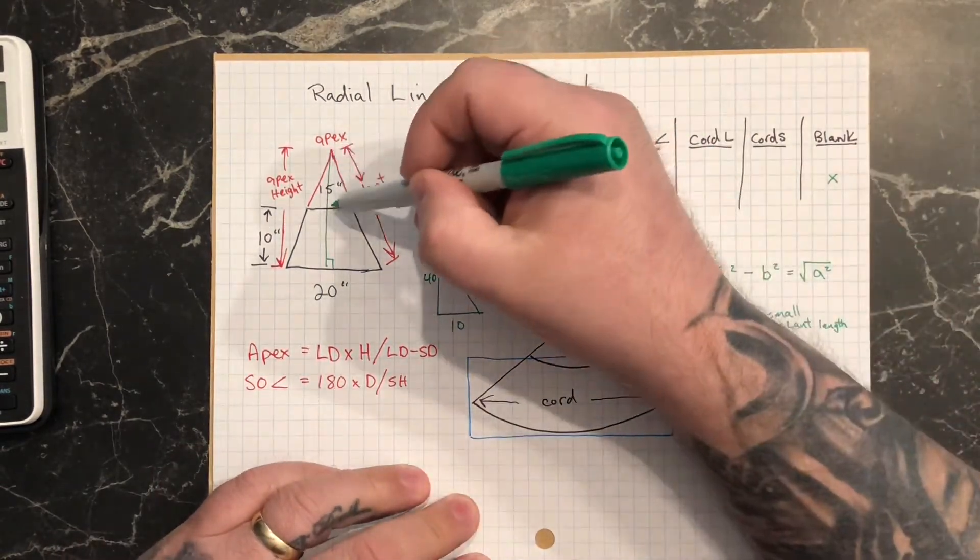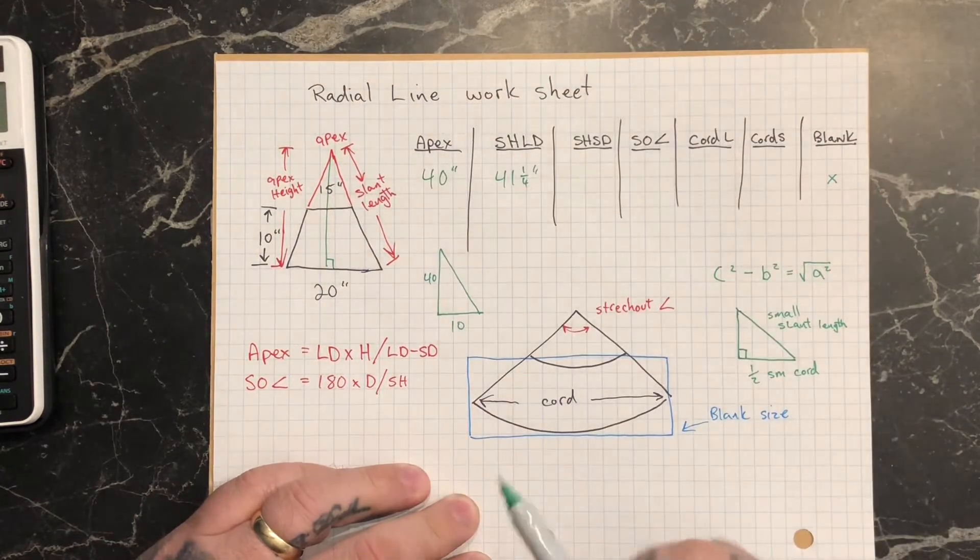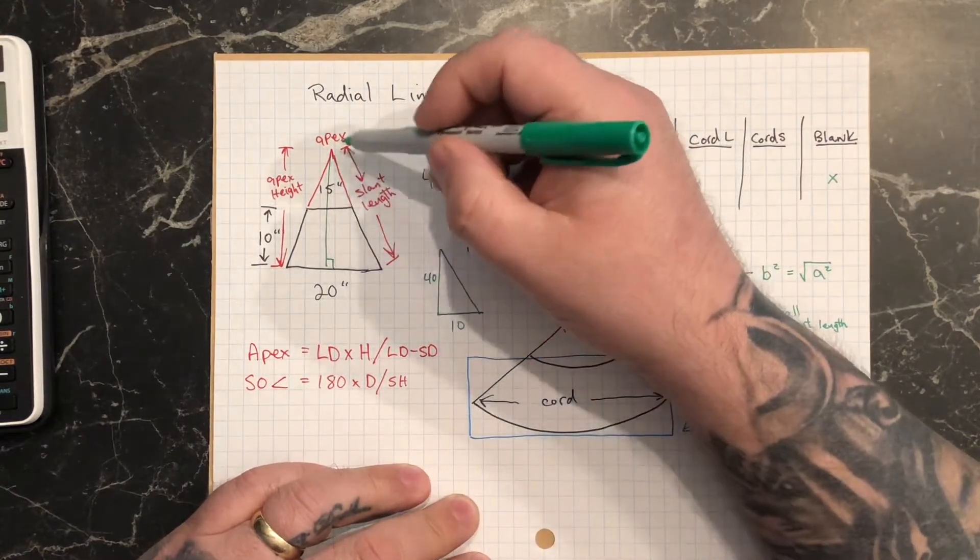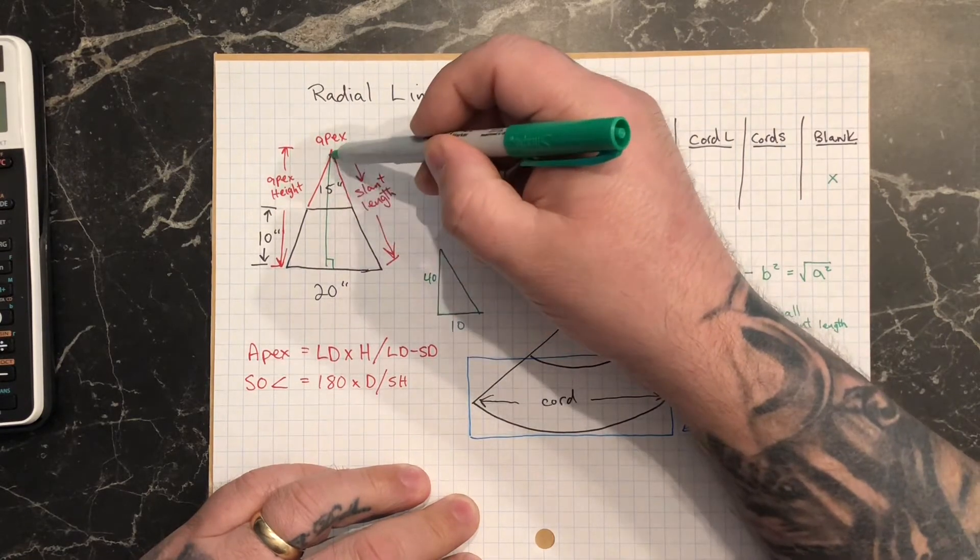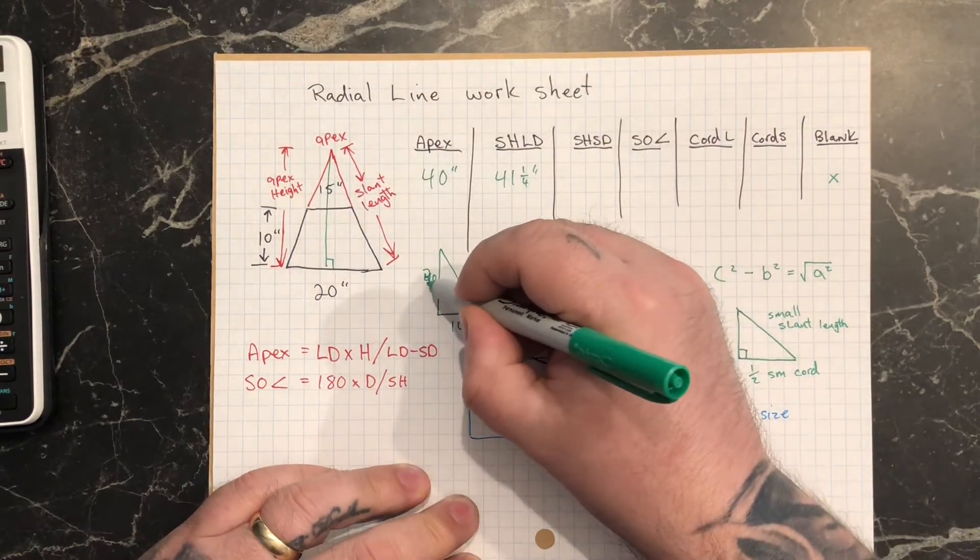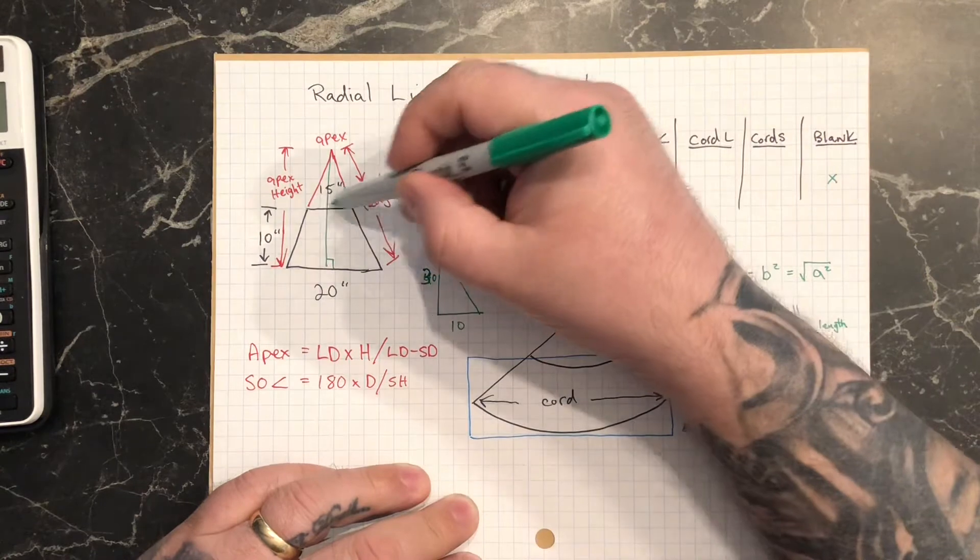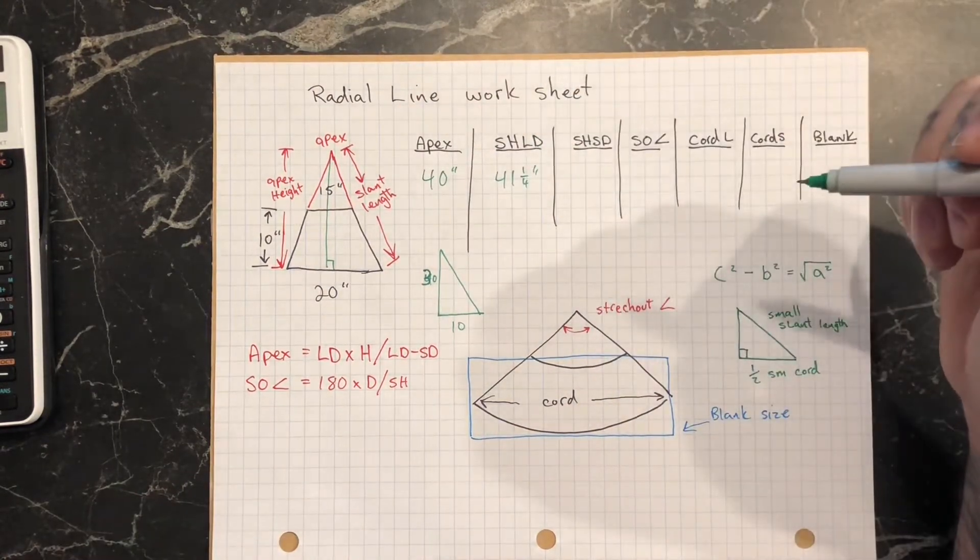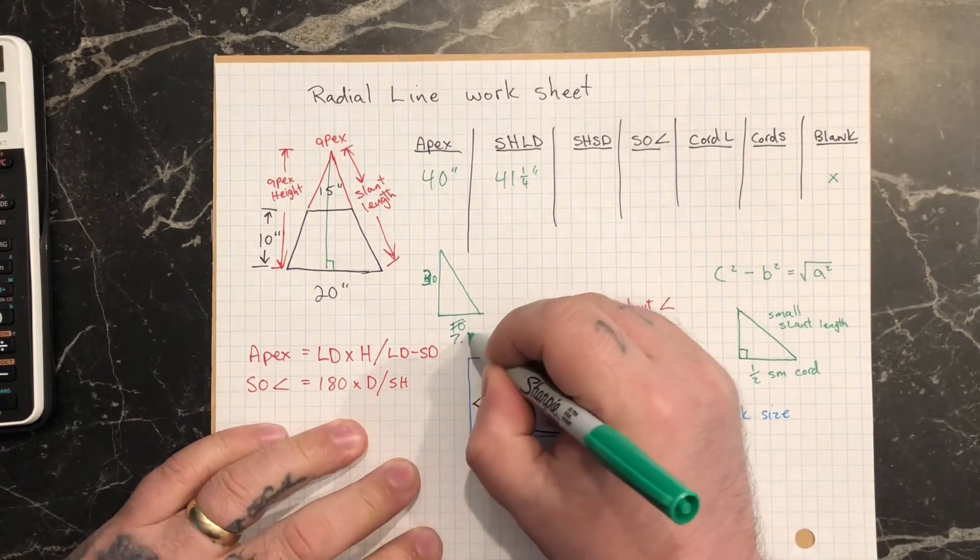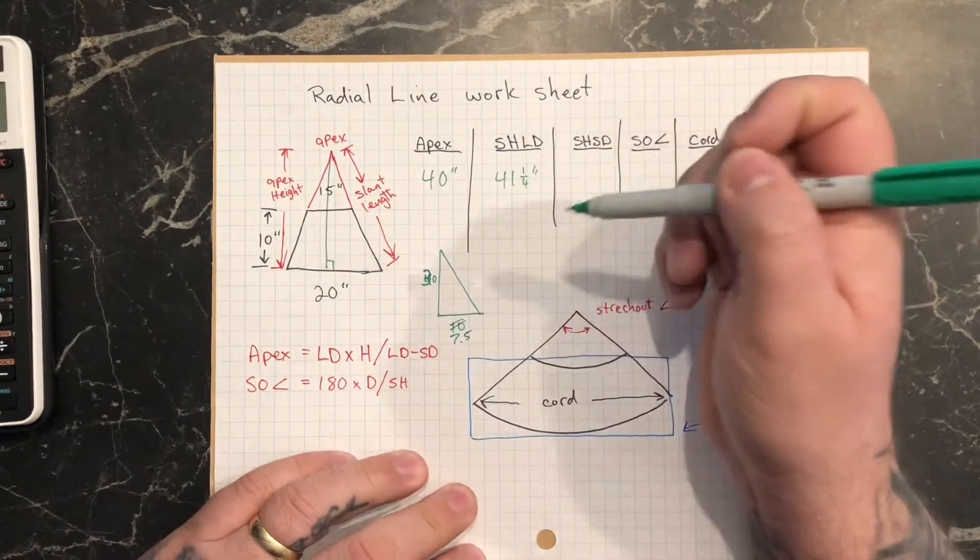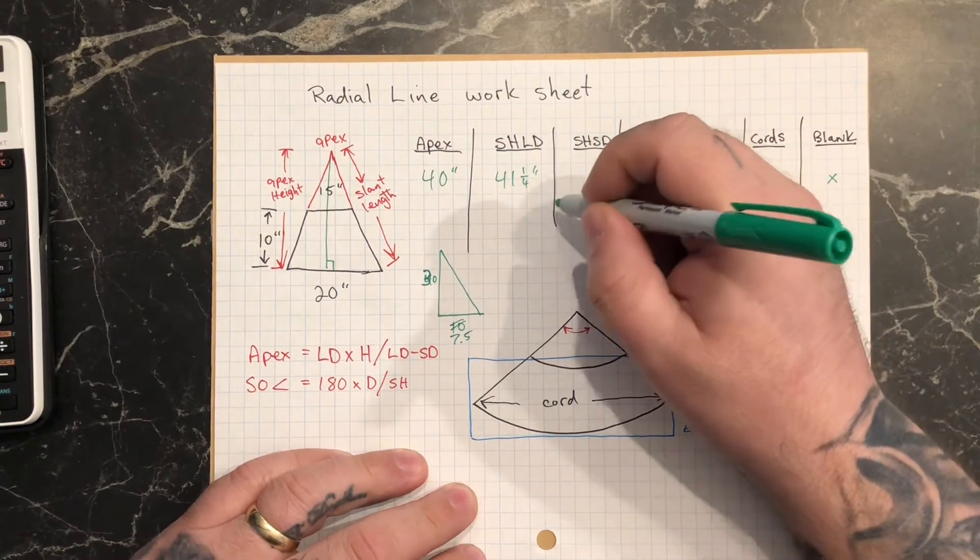The slant height on the small diameter is just this little triangle up here. That is basically the large triangle, the apex height minus the 10 inches is gonna give us the height of the small one. So that one ends up being 30 inches there for the small triangle. And then half of the smaller diameter is seven and a half inches. Seven and a half squared plus 30 squared, and the square root of the hypotenuse gives us 30 and 15 sixteenths.